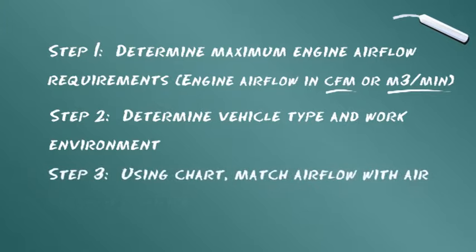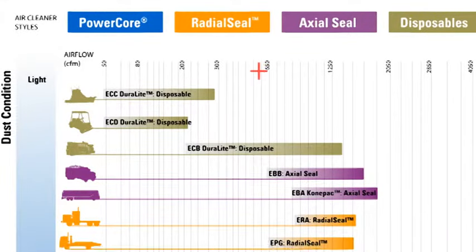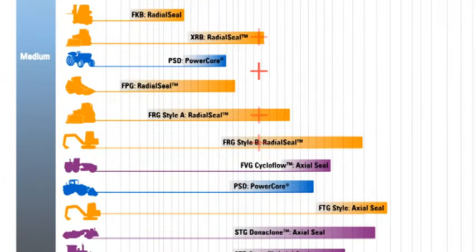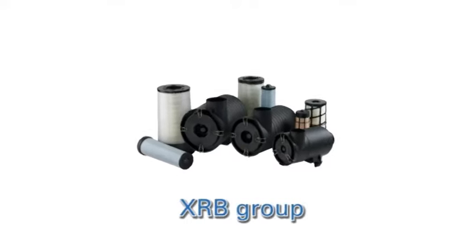Als dritten Schritt folgen Sie der Linie in der Tabelle, die Ihrem Luftdurchsatz entspricht. In diesem Fall, einer Umgebung mit mittlerer Staubbelastung, erfüllen drei Luftfilterbaureihen die Anforderungen eines Durchsatzes von 600 CFM oder 17 Kubikmetern pro Minute. Die Tabelle zeigt die Modelle XRB, FRG Typ A und FRG Typ B.